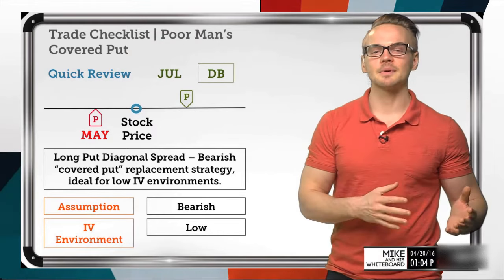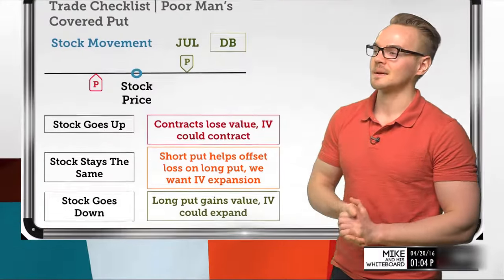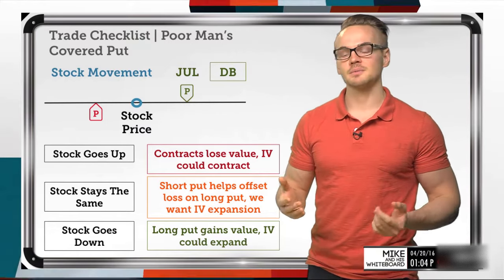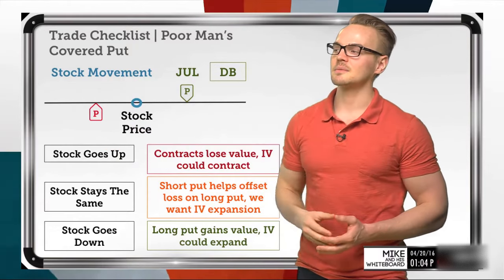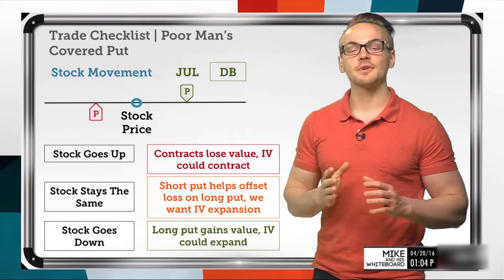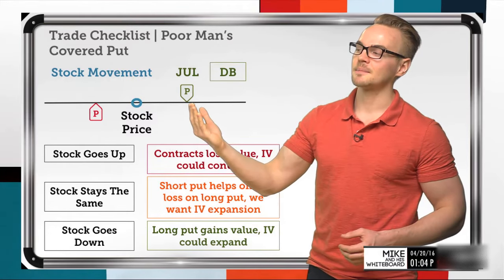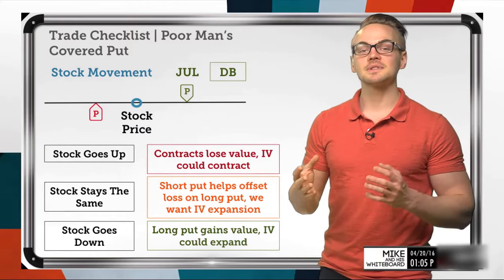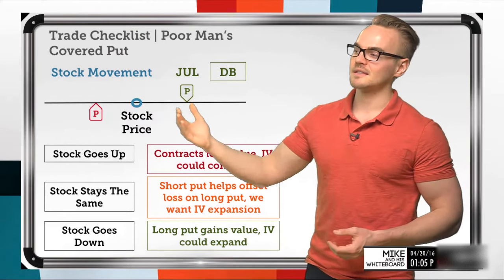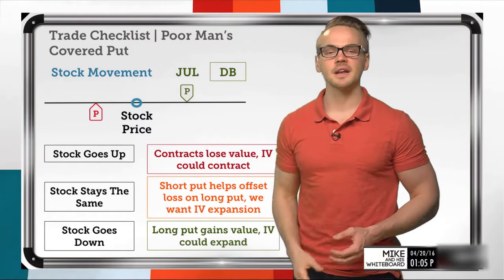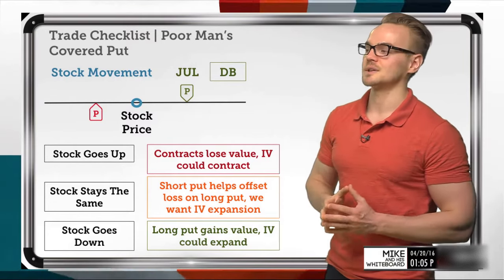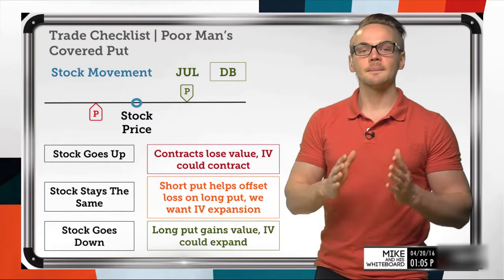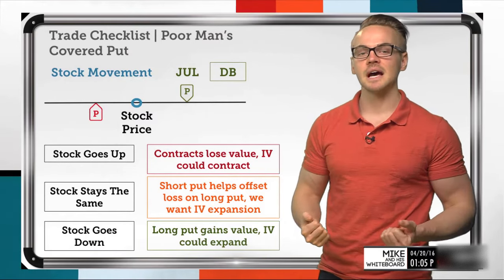When the stock goes up, this is really the worst case scenario. The contracts are going to lose value because even though the long option is in the money and the short option is out of the money, we're going to see both options move further out of the money. Options that are out of the money are worthless at expiration, so if the stock price comes all the way up where both options would be out of the money, we would lose all the value we paid for this strategy. Also, IV could contract — we normally see that when the market is going up, implied volatility is coming down.